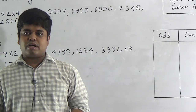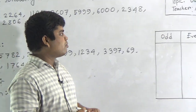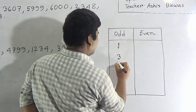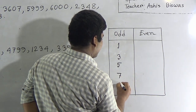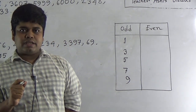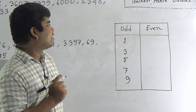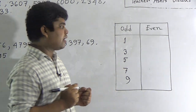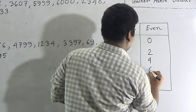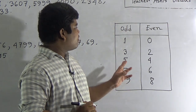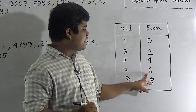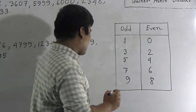Before starting our class, we need to know what are the even numbers and what are the odd numbers from one to ten. From one to ten, the odd numbers are one, three, five, seven, and nine. From one to ten, the even numbers are zero, two, four, six, and eight.